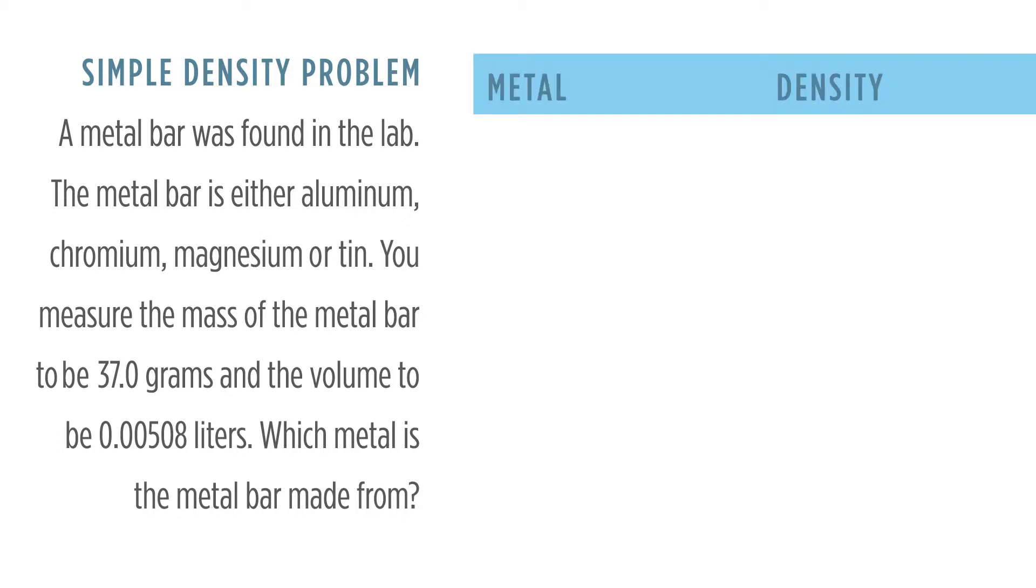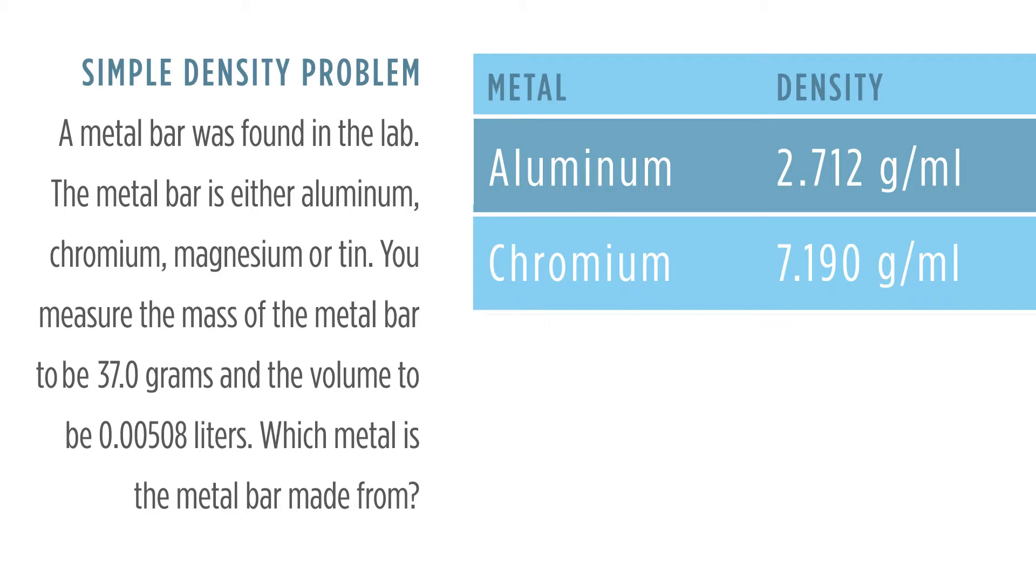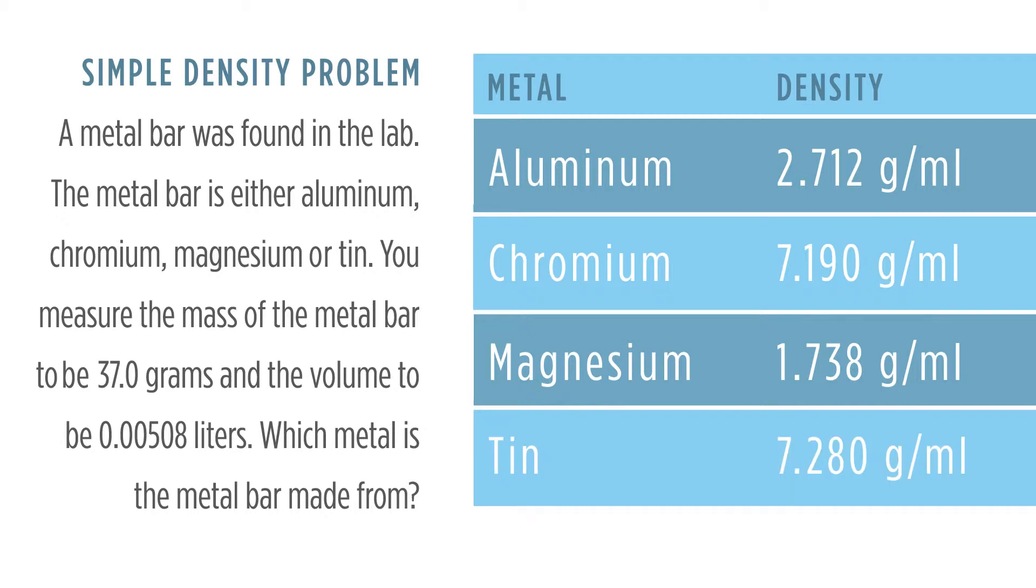It also gives us a table where we see metal and density: aluminum, 2.712 grams per milliliter; chromium, 7.190 grams per milliliter; magnesium, 1.738 grams per milliliter; and tin, 7.280 grams per milliliter. If we analyze our problem, we can see that the question is actually asking for the metal.